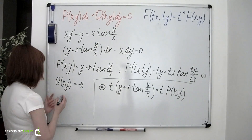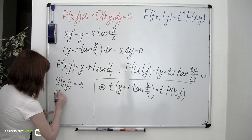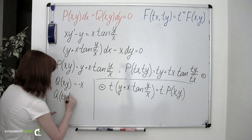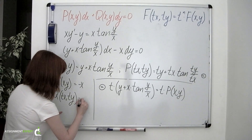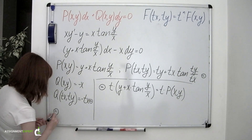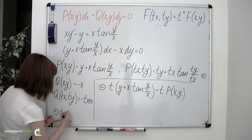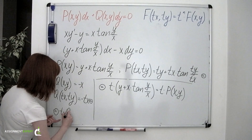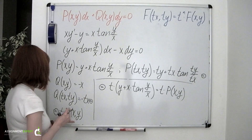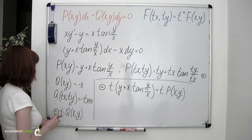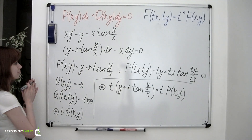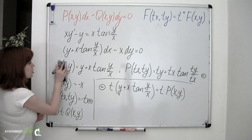Now let's take a look at the Q function. Q of tx and ty equals negative tx, which is the same as t multiplied by Q of x, y — the initial one. So this means that the Q function is homogeneous of the first degree, as is P. Therefore, our equation is homogeneous.